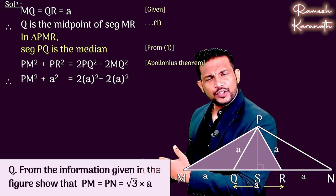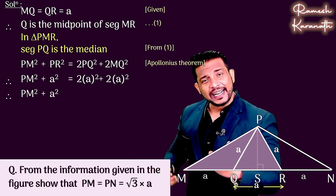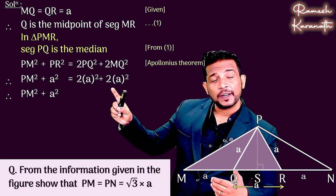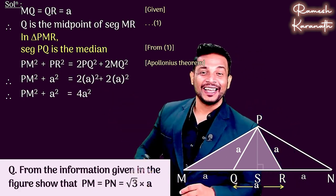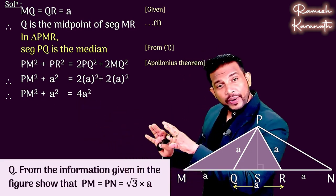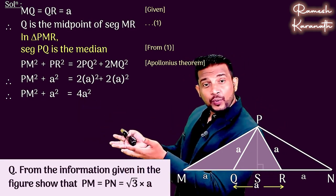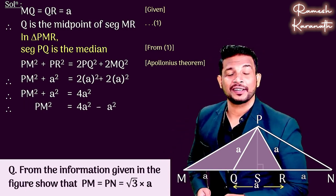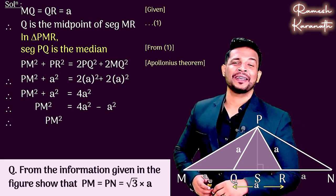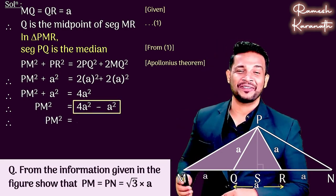On the right-hand side, twice of a square plus twice of a square, which is 4 times a square. PM square plus a square equals 4a square. If you see here, 4a square minus a square equals 3 times a square. That means we get PM square is equal to 3a square.